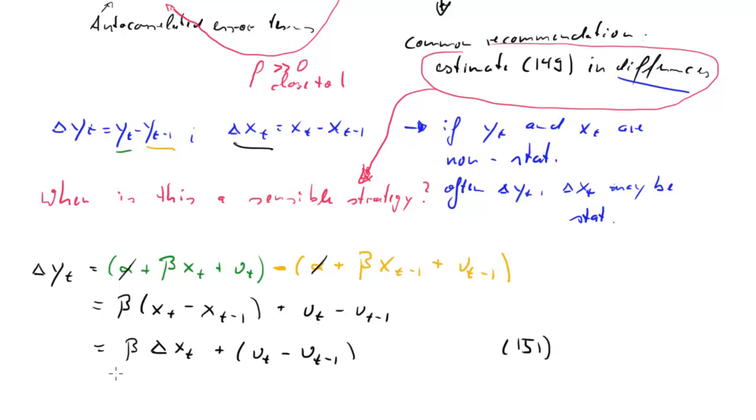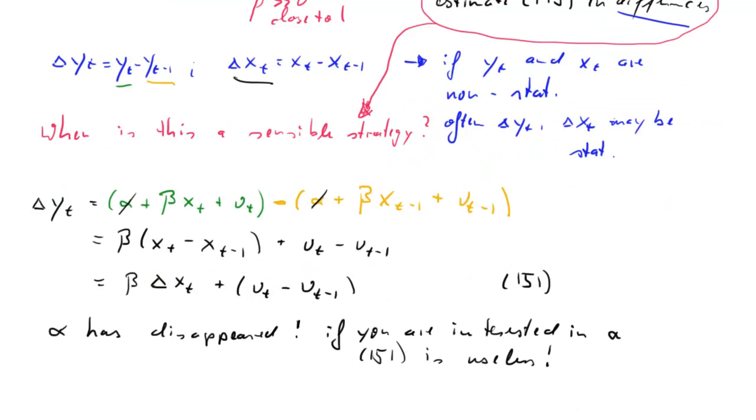So it's pretty obvious that alpha has disappeared. That means if you're interested in alpha, equation 151 is useless. So that's the first thing to note. Now why has it been recommended? So at this stage, alpha has disappeared but beta is still there. So beta we may be able to estimate from this regression in differences.